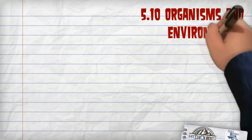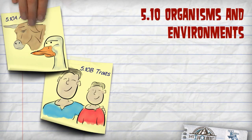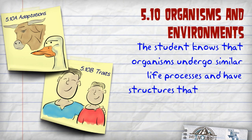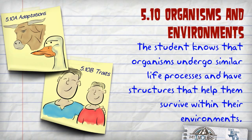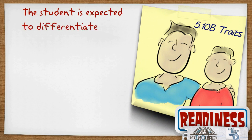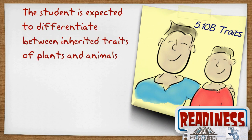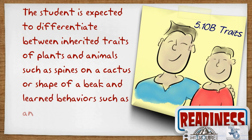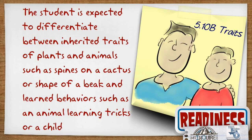5.10 Organisms and Environments: The student knows that organisms undergo similar life processes and have structures that help them survive within their environments. 5.10B Traits: The student is expected to differentiate between inherited traits of plants and animals, such as spines on a cactus or the shape of a beak, and learned behaviors such as an animal learning tricks or a child riding a bicycle.